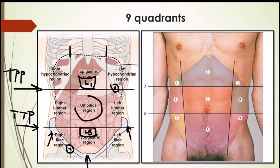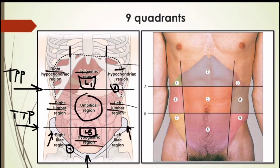The central region is the umbilical region, where the umbilicus lies — somewhere between L3 and L4. To its left is the left lumbar, to its right is the right lumbar. Above is the epigastric region, on either side of which are the left and right hypochondriac regions respectively. Below the umbilical region is the hypogastric region, on either side of which lie the left and right iliac regions. The concept of the nine quadrants helps us understand the rough disposition of where the viscera lie.